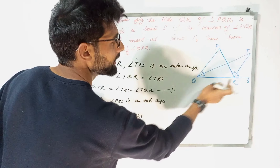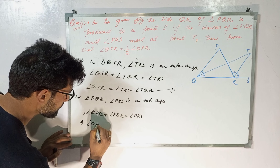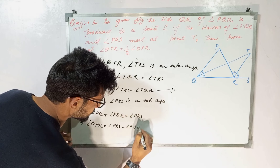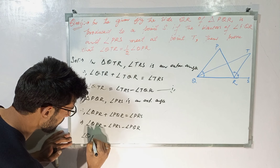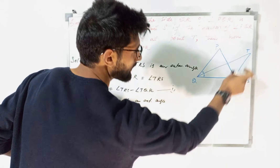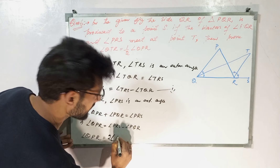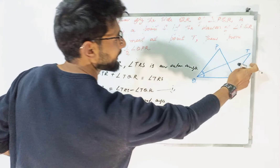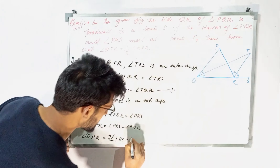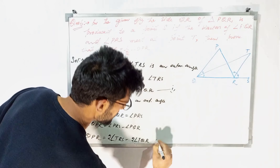So angle QPR equals angle PRS minus angle PQR. Since QT and RT are angle bisectors, we can write angle PRS as two times angle TRS, and angle PQR as two times angle TQR. Therefore angle QPR equals two times angle TRS minus two times angle TQR, which gives angle QPR equals two times the quantity (angle TRS minus angle TQR).